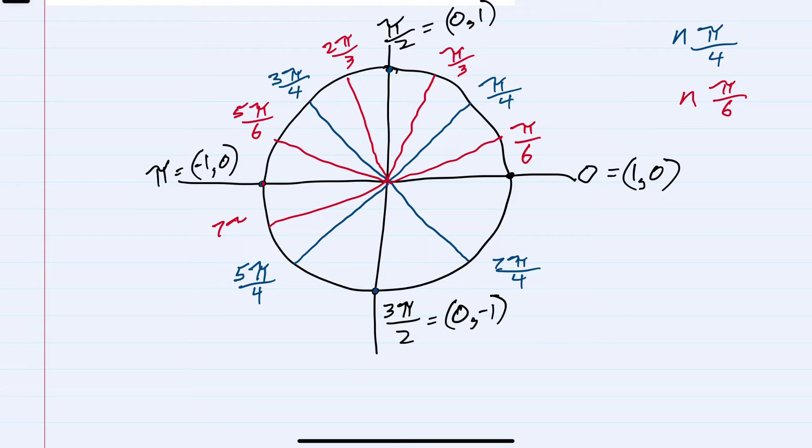Six π/6 is π. Then 7π/6. Eight π/6 simplifies to 4π/3. Nine π/6 is 3π/2.